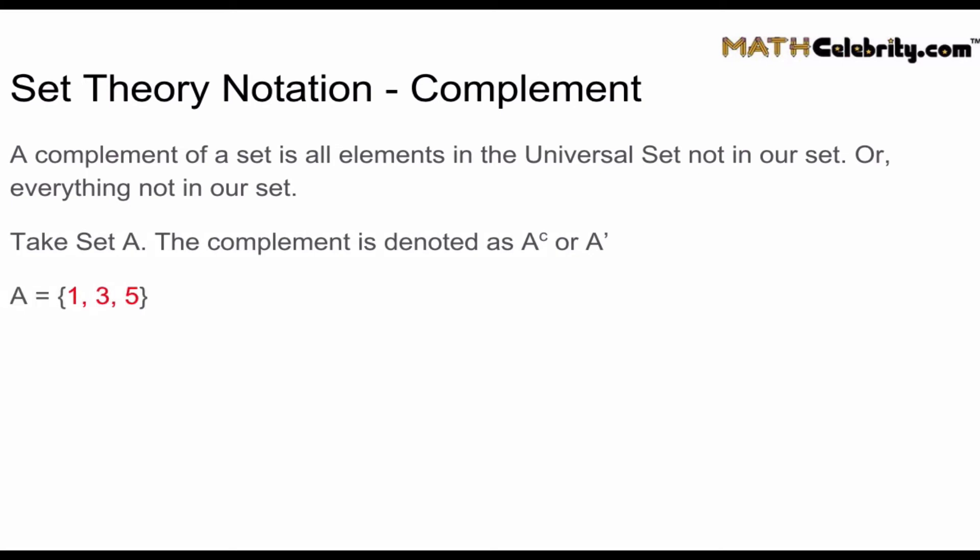So let's take A as the elements one, three, five. Let's take A complement as any other number but one, three, five. So let's say we want all the numbers in the universe or all the integers. A complement is going to be any other number but one, three, five. So within A complement, we'll have two, four, six, seven, eight, and so on.